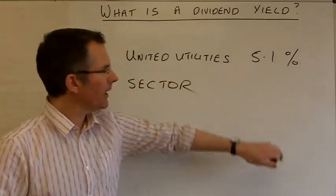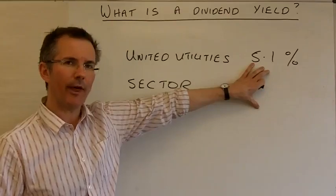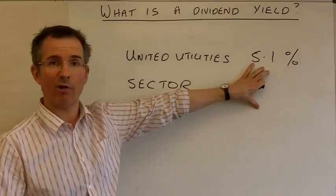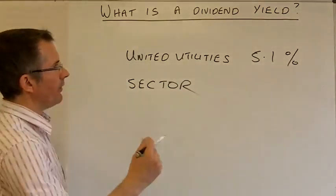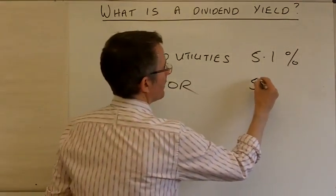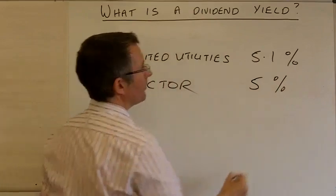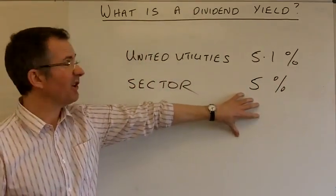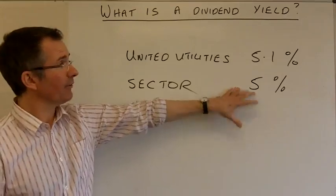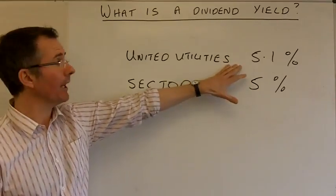That's a good starting point. Is United Utilities generous in the sector, stingy or about average? And maybe what I find out is that the utilities sector generally offers a dividend yield, on average across all companies in it, of around 5%. So, United Utilities is pretty typical, really. So that's not telling me very much.